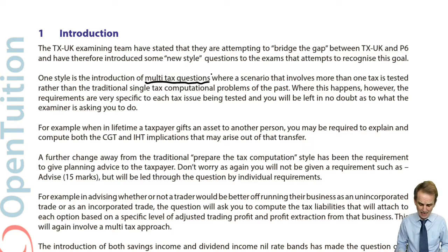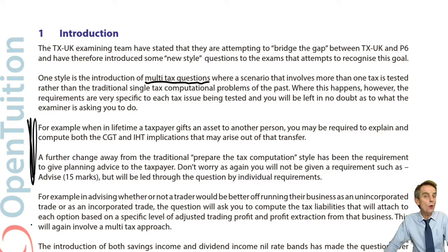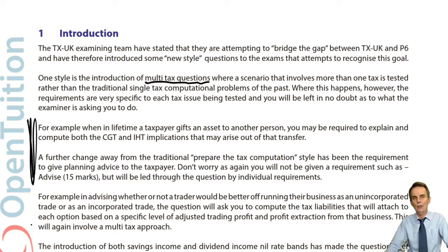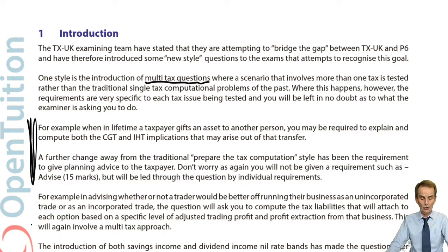What we have when we move assets between spouses is, in fact, no difficulties — no problems arise as regards the capital taxes. For capital gains tax purposes, it would be dealt with as a no gain, no loss transfer, so no gain arising on the transferor spouse. It transfers at the cost of the transferor, becoming the cost to the transferee — at cost rather than market value. We also said there'll be no IHT problems, because transfers between spouses or civil partners are exempt.